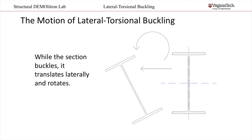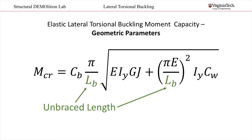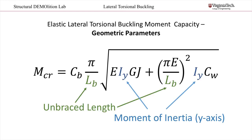However, this is not always the case. Seen here is the equation for the moment capacity limited by elastic lateral torsional buckling. This can be found in chapter F of the AISC specifications. This equation is part of a user note; however, it provides an identical solution to equations F2-3 and F2-4. Take a moment to look over this equation. Similar to Euler's buckling, the unbraced length and the moment of inertia about the y-axis are two geometric properties that affect lateral torsional buckling.